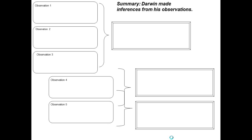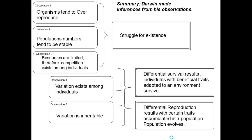To summarize Darwin's observations and inferences: Observations — organisms tend to over-reproduce; population numbers tend to be stable; resources are limited, therefore competition exists. This leads to the inference of a struggle for existence. Additionally, variation exists among individuals, and variation is heritable. This results in differential survival and reproduction — beneficial traits adapted to the environment accumulate in a population, and therefore that population evolves.